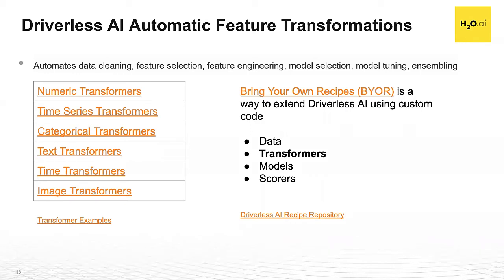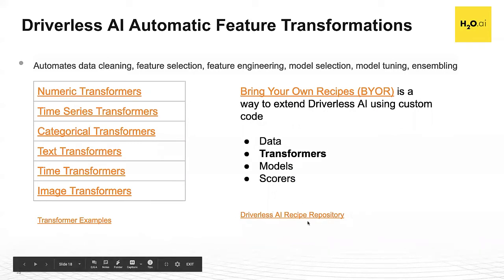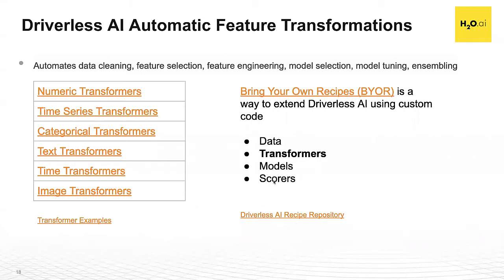There are several different types of recipes: data recipes related to data cleaning, transformation recipes for feature transformations, model recipes for models not included out of the box or custom models, and scorer recipes for how you evaluate your model. These are all ways to use Driverless beyond the base package. The GitHub repo — which I'll show in a moment — really stands true to democratizing access to AI, with lots of good code examples of recipes for all these different categories.